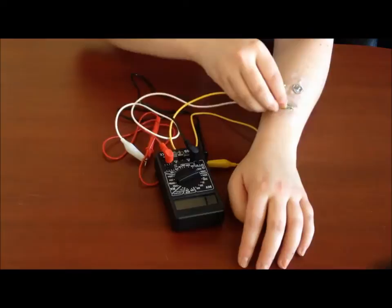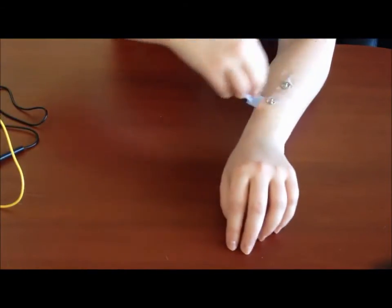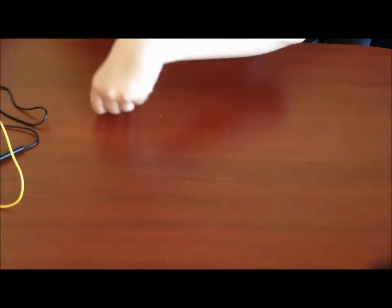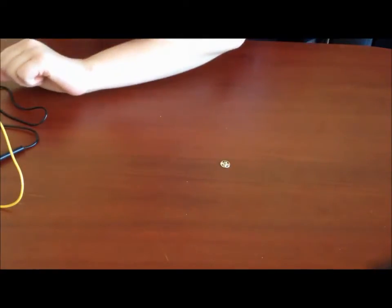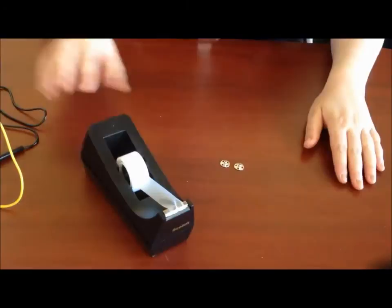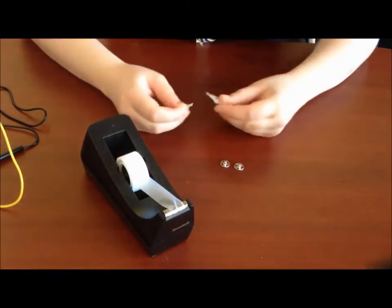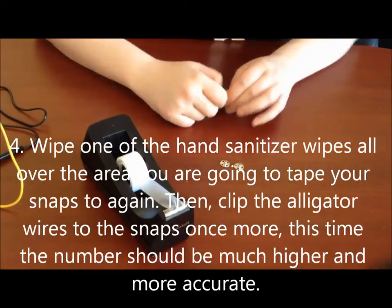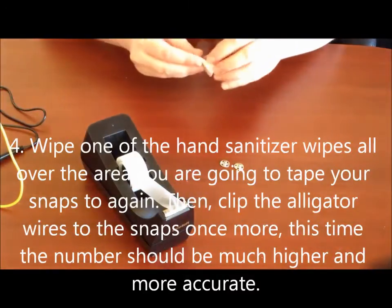So then we're going to take it off and you're going to take off the snaps and you're going to get out your hand sanitizer wipes. But hold on to the snaps because we're going to need those in just a second. So we're going to get our tape again, our two snaps and our hand sanitizing wipes. Now you're going to try to get your arm wet with the hand sanitizing wipe before you tape the snap to your arm.